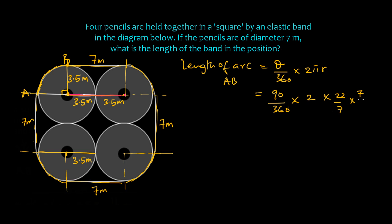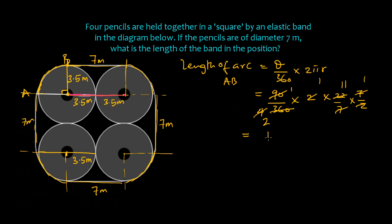Substituting into the formula: (90/360) × 2 × (22/7) × (7/2). Simplifying — 90 over 360 gives 1/4, the 7s cancel, the 2s cancel, leaving 11/2. So the length of each arc is 11/2 centimeters.